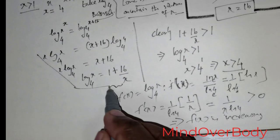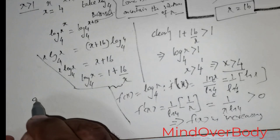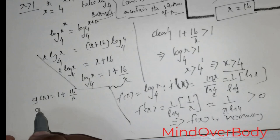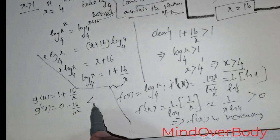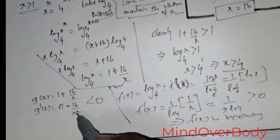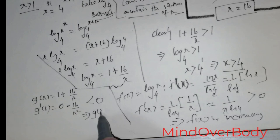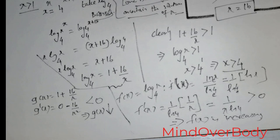Now let me consider the other side. Let g of x equal 1 plus 16 over x. Finding g prime of x: differentiation of 1 is 0, and differentiation of 16 over x gives negative 16 over x squared. This is less than zero, regardless of the value of x, which means g of x is a decreasing function.